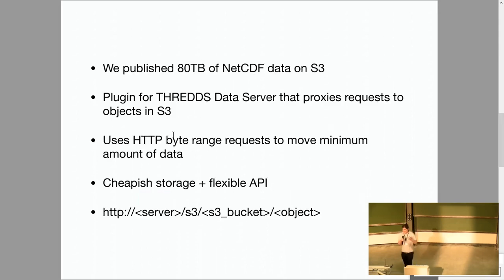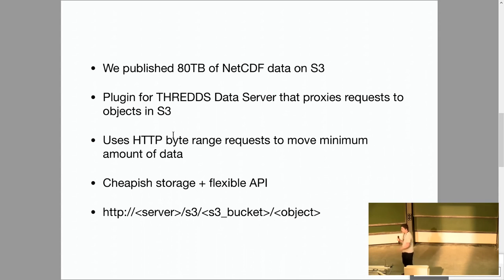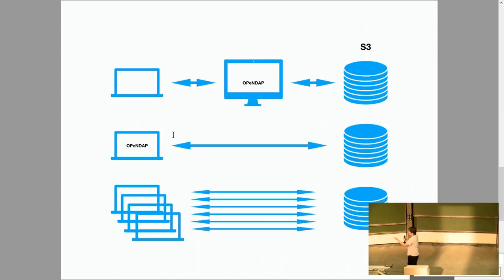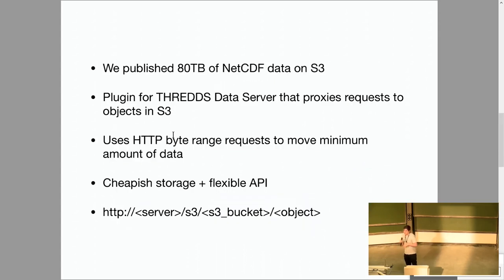Our problem is that our data isn't on the server — it's on S3. Our tools don't work with S3, they're OpenDAP. So we put together a plugin that proxies NetCDF requests to the THREDDS OpenDAP server into S3. It uses byte ranges, so it doesn't move much data around. You get the best of both worlds: the cheap-ish storage of an object store and the flexible API of OpenDAP. It's completely generic, so you can access any NetCDF object.